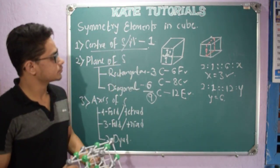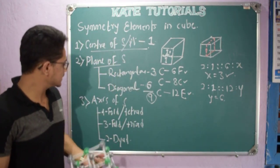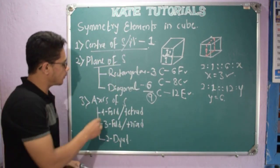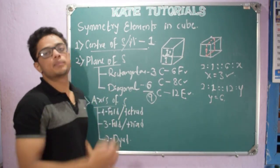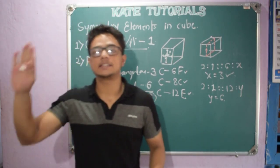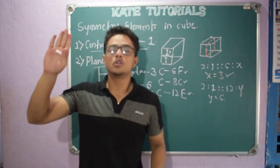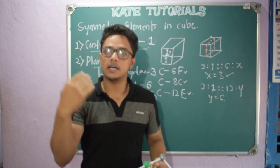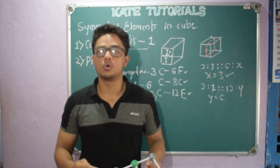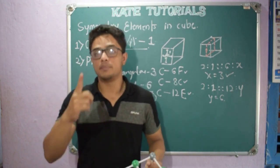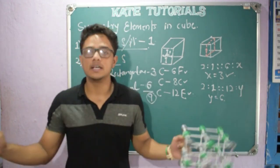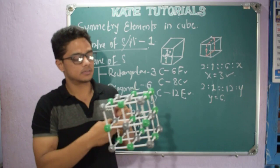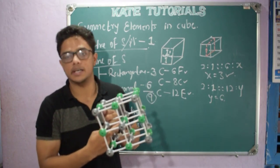So we have nine planes of symmetry: three are rectangular planes of symmetry and six are diagonal planes of symmetry. Now let us discuss axis of symmetry. In plane of symmetry, I sent a plane through the cube to cut it into two equal halves; the condition is the plane must pass through the center of symmetry.